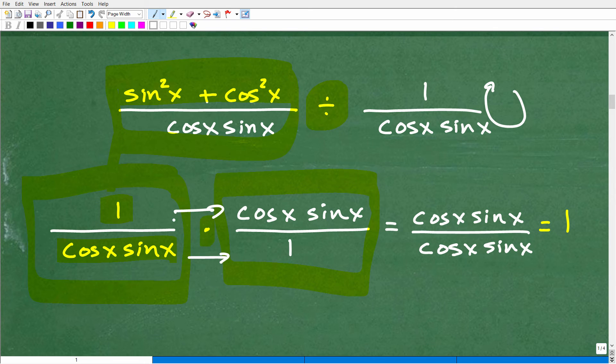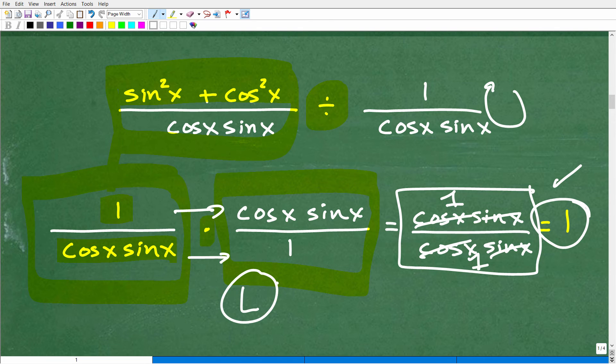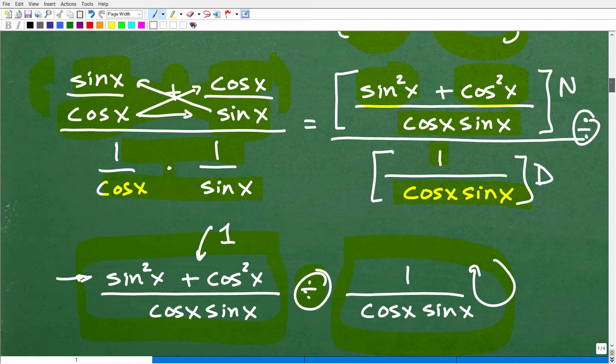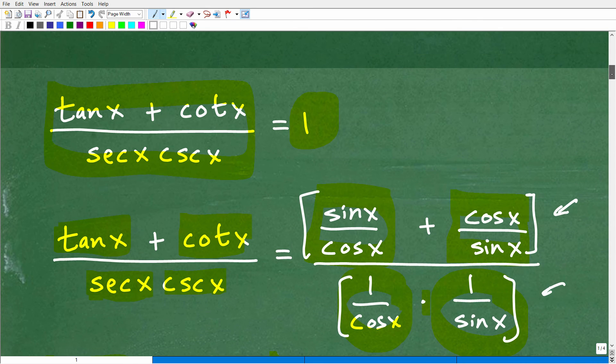So, now, at this point, I just go ahead and multiply across numerator times numerator and denominator times denominator. And, you can see I'm going to have cosine x times sine x over cosine x times sine x, and everything across cancels. And, we're just left with one over one or one. And, there you go. So, we just verified that. We started with the left-hand side with the goal of getting that equal to a one.